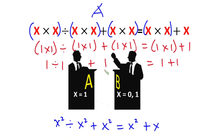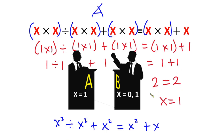1 divided by 1 is still 1, then plus 1 is 2. On the right side we have 1 plus 1, which is also 2. So we can say that x equals 1 is a solution to this problem. From contestant A, the value is only 1.